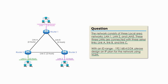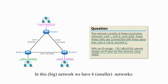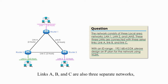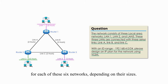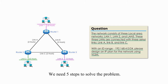Back to the question. In this network, we have six networks: LAN 1, LAN 2, LAN 3, link A, link B, and link C. Links A, B, and C are also three separate networks, and each needs two host IDs. Thus, our task is to design an IP plan for each of these six networks depending on their sizes. Thus, we use VLSM as our subnetting method. We need five steps to solve the problem.